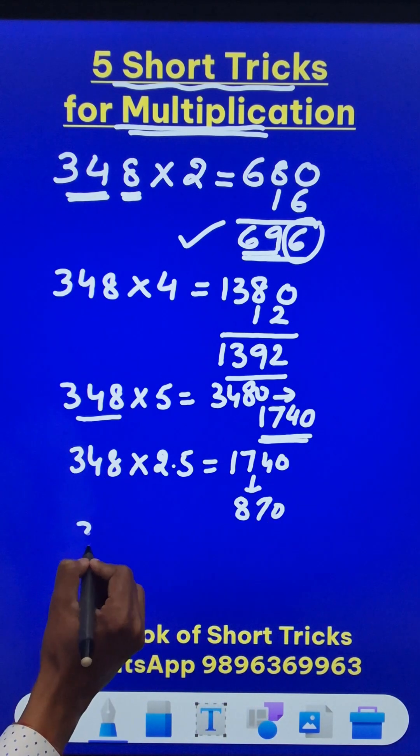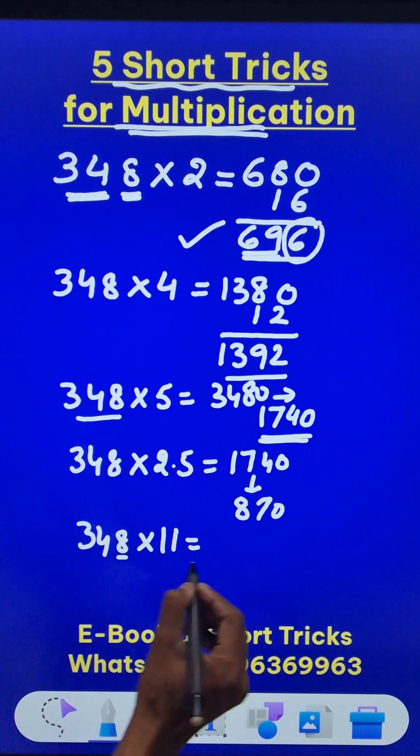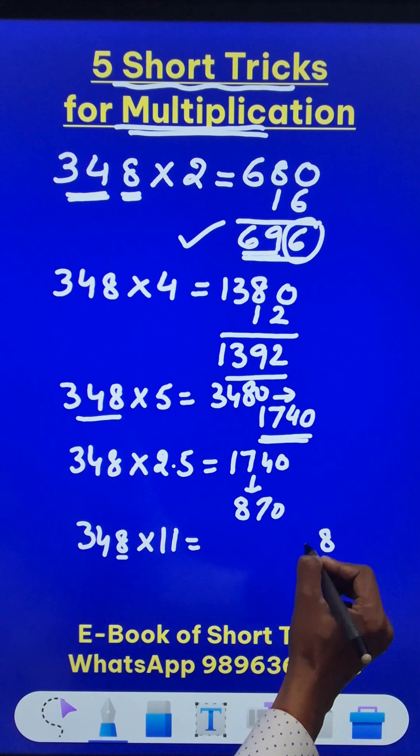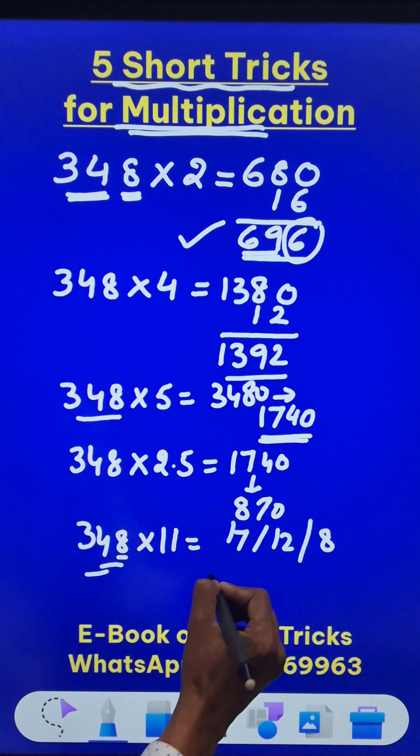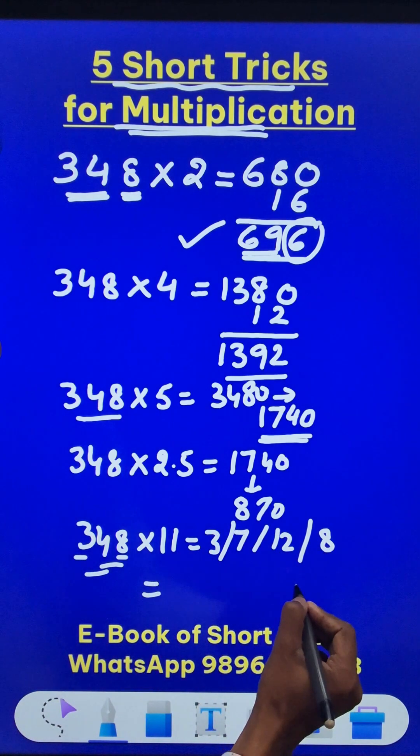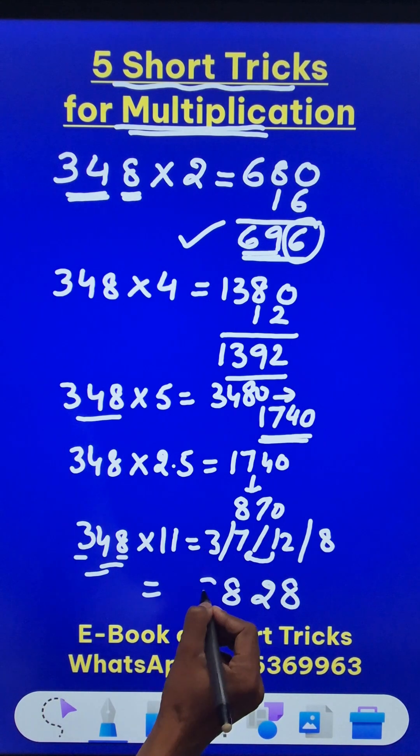Likewise, suppose you have to do 348 times 11. So you need to write some numbers starting from the unit digit. We have the 8 here. Then 8 plus 4 is 12. Then 4 plus 3 is 7. And finally, the first digit 3. Now start writing from the unit digit, 8. 12 means 2, 1 carried. 7 becomes 8. And finally you have the 3.